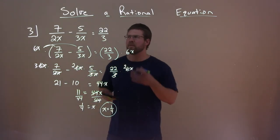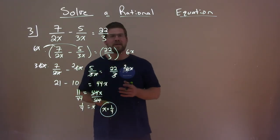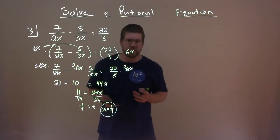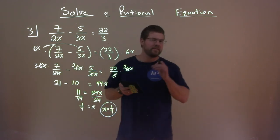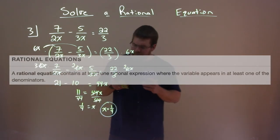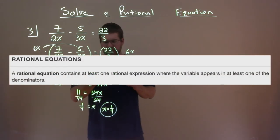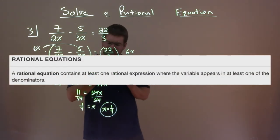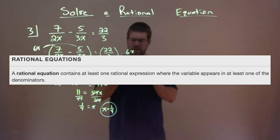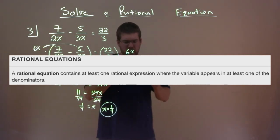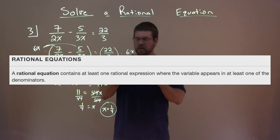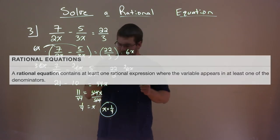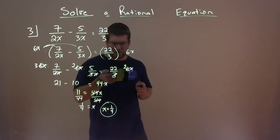So now we've solved our first rational equation. Let's go with more of a definition: a rational equation contains at least one rational expression where the variable appears in at least one of the denominators.